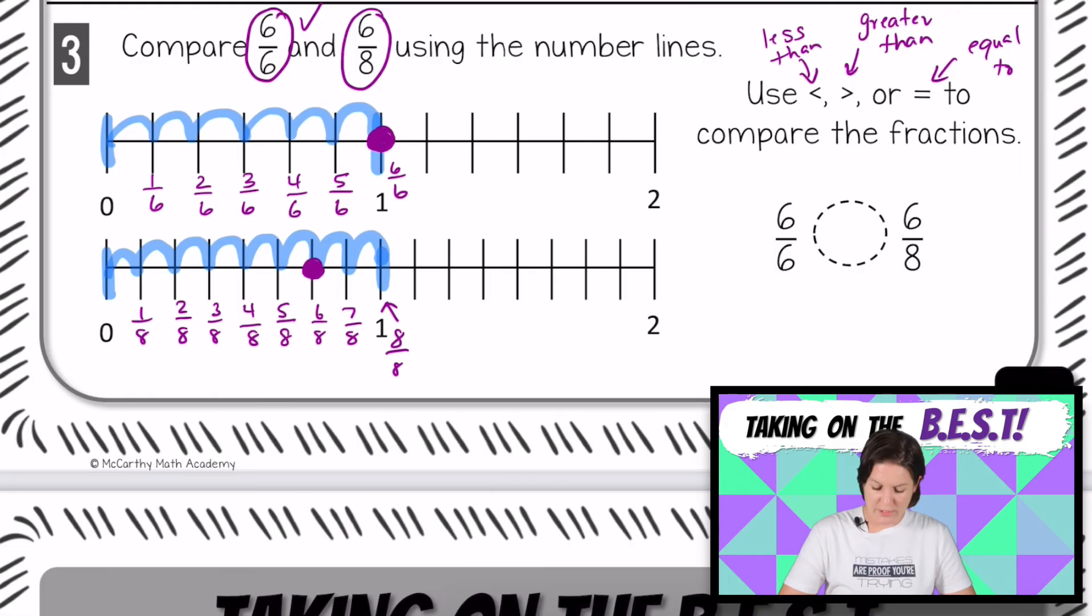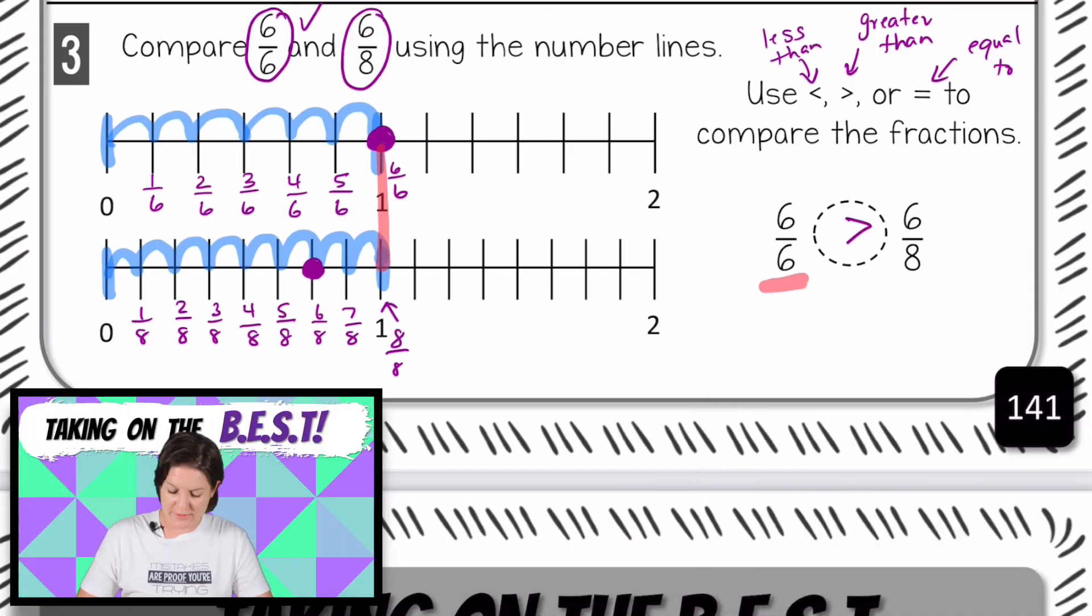So we can see that 6/6 is greater than 6/8. So let's use the correct sign. Let's write it down. 6/6 is greater than 6/8. And that is it for this video lesson. So pause the video to make sure you have all of this copied. And then let's close out this video.